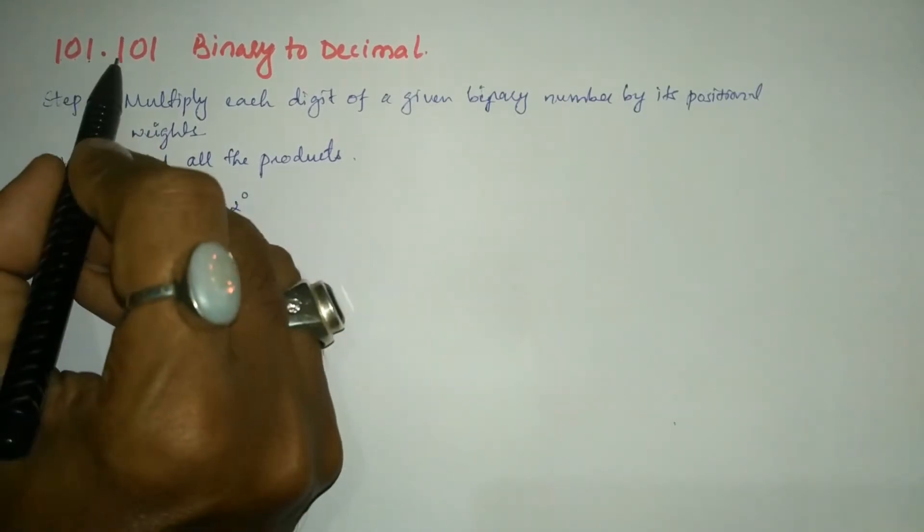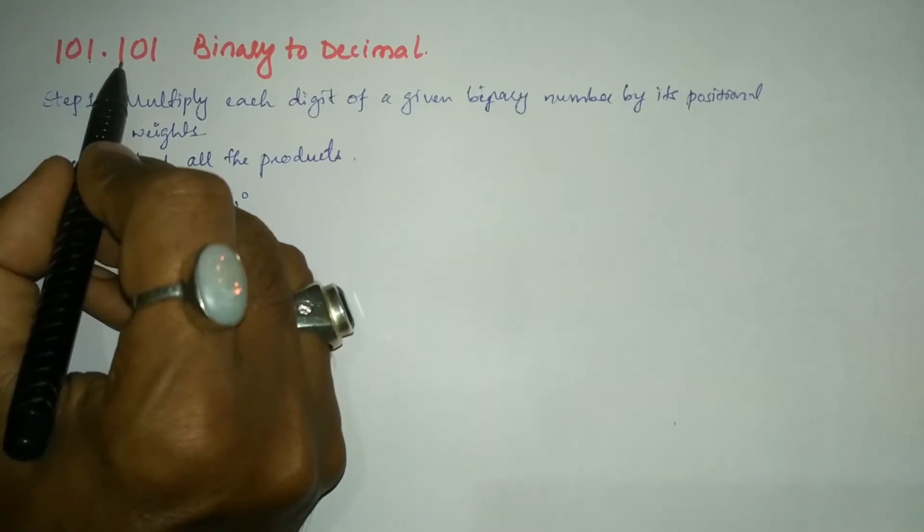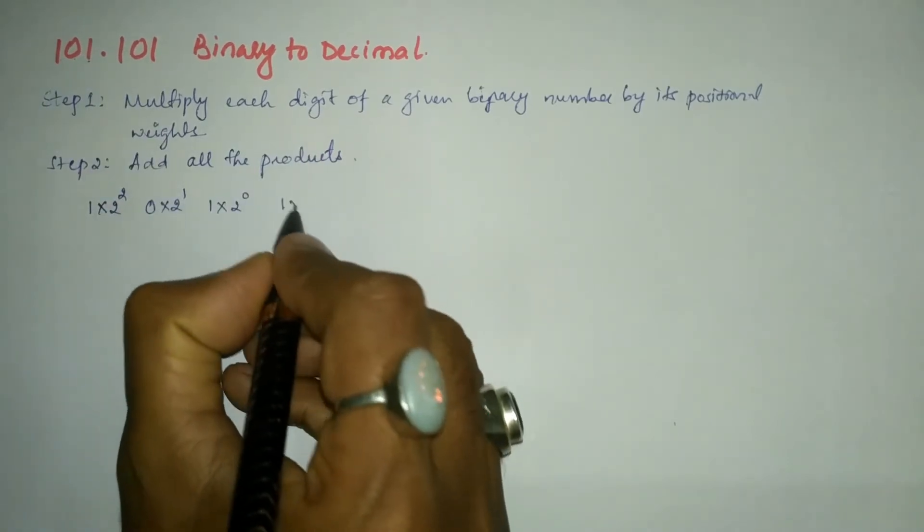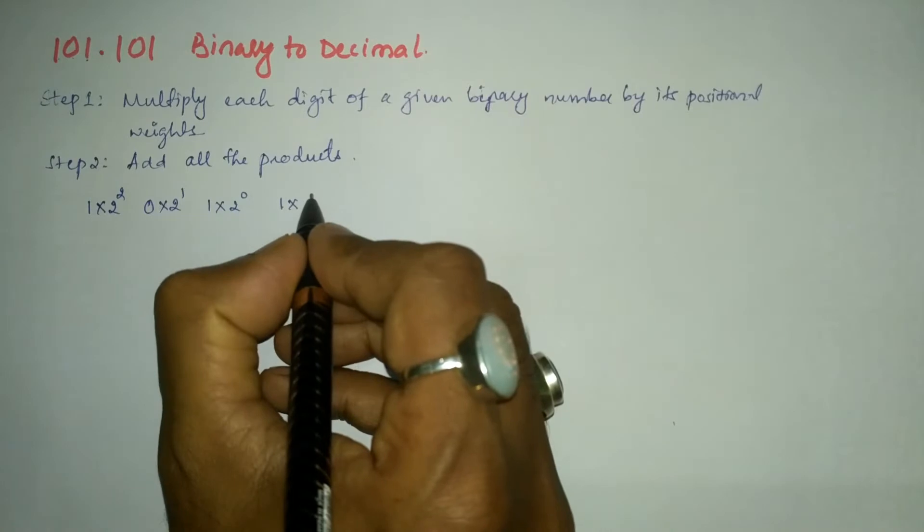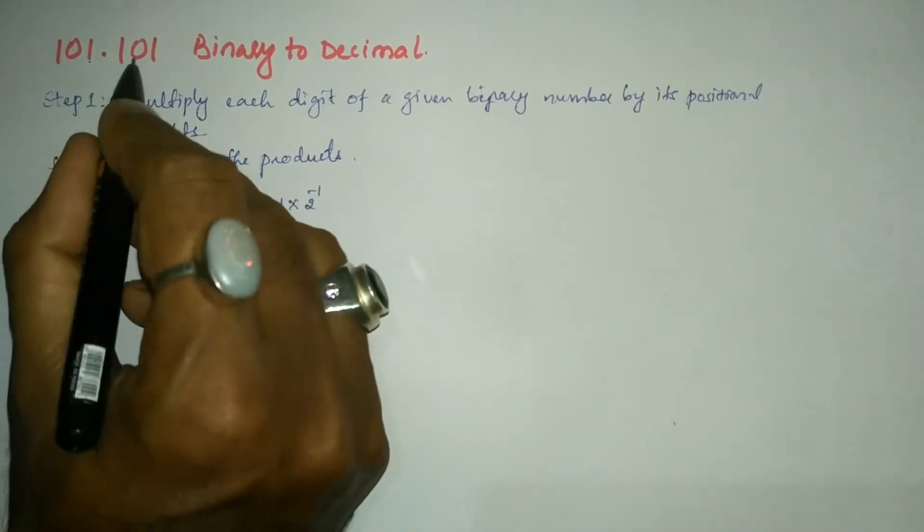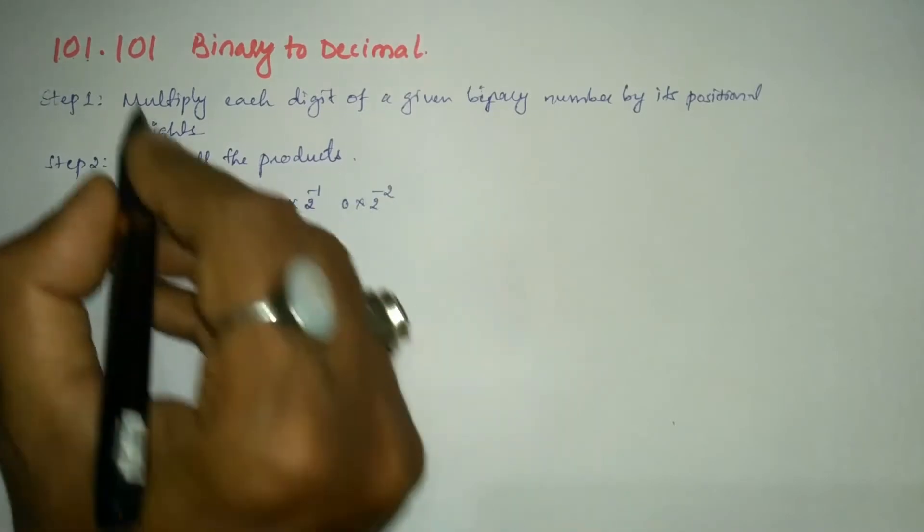After the decimal point we have got one. So we have to start counting from the left hand side. Here we have to consider this bit number one and multiply its positional weight 2⁻¹, next is bit number 0×2⁻², next bit is 1×2⁻³.